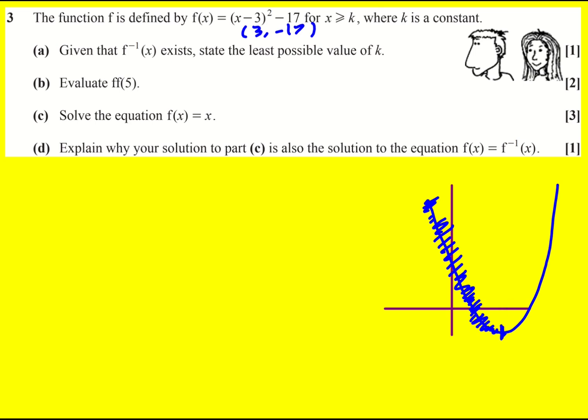Therefore it's going to start here at the minimum point and therefore the least possible value k is going to be k equals 3 because remember that was our (3, -17), that was our minimum.